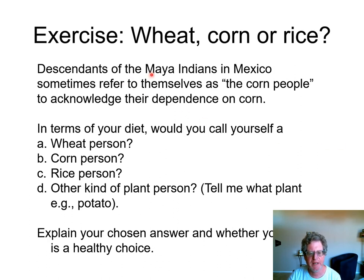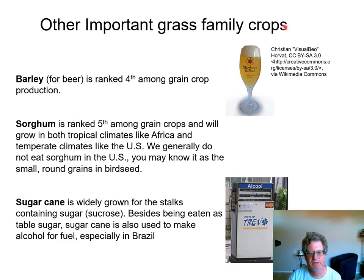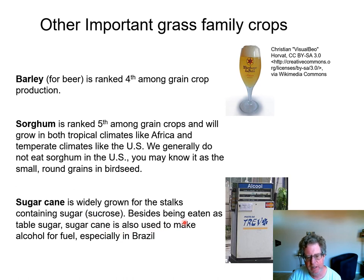The Maya people of Mexico still call themselves the corn people because of their dependence on corn. What about your diet — do you eat bread and pasta? Are you a wheat person? Do you eat a lot of cheese, milk, and hamburger? Are you a corn person? A rice person? Maybe a potato person? Here are some other important grass crops: barley is a top-ranked grass crop grown largely for beer. Sorghum, which we saw in the first slide in Africa, grows very well in tropical countries — we're most familiar with it from bird seed. Sugarcane is not grown for the grain; it's grown to make white table sugar and to ferment into alcohol. In Brazil, for example, many cars run on alcohol made from sugar cane. Those are all members of the grass family.